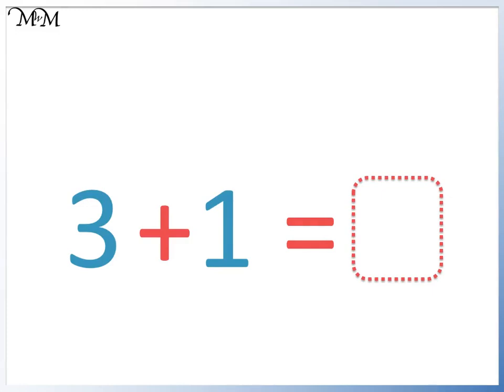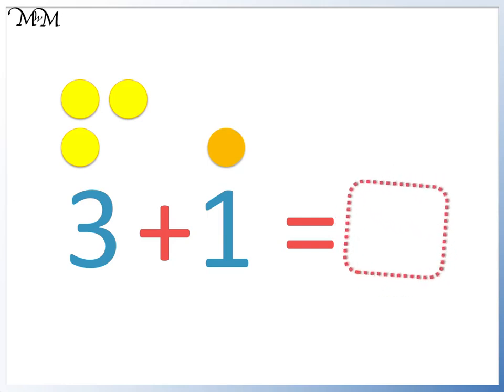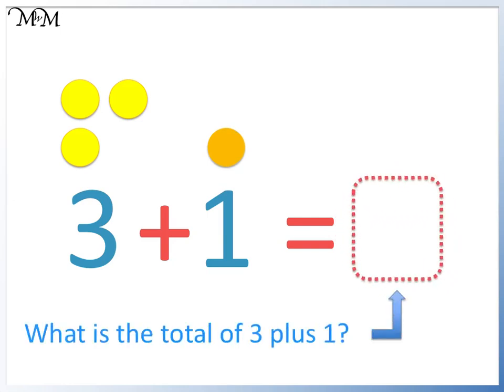Here we have the number sentence 3 add 1. In this box we have a missing number. Since we have an addition sum, the number after the equal sign is the total of 3 add 1. 3 add 1 equals 4.